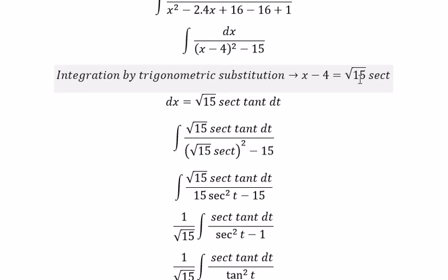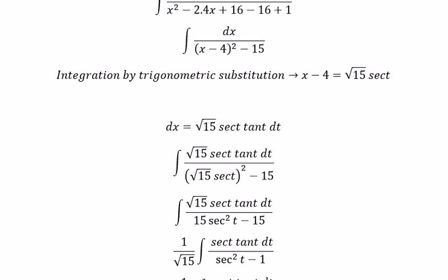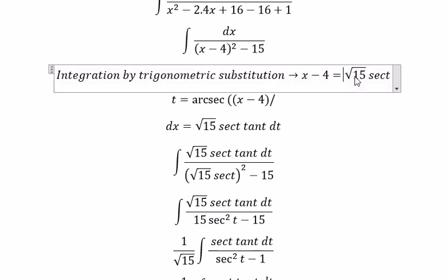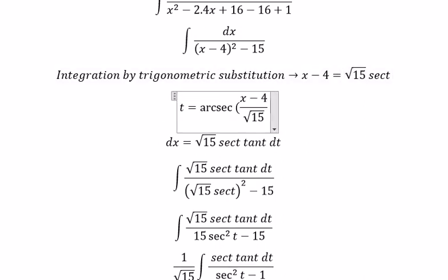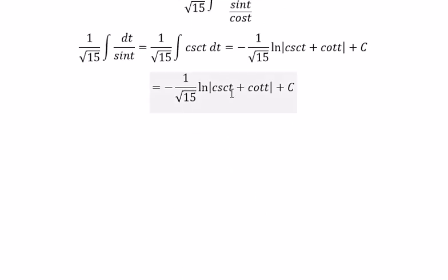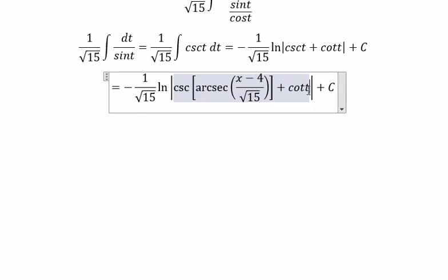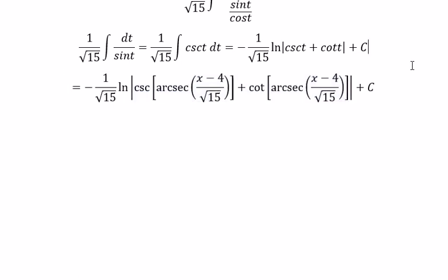So we divide both sides by the square root of 15. We get t equals arcsecant of (x - 4) over the square root of 15. We substitute this in, and that is the final answer.